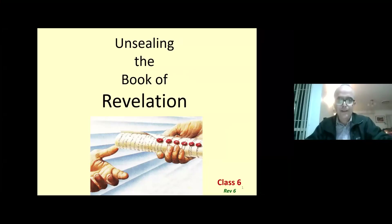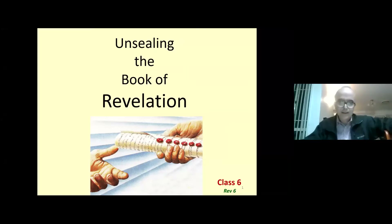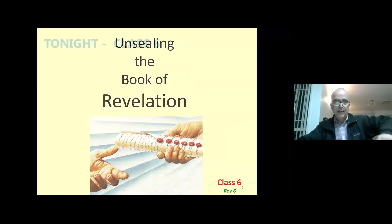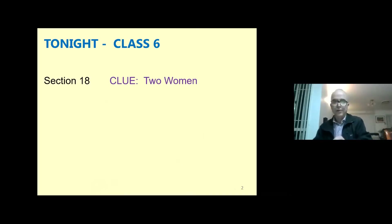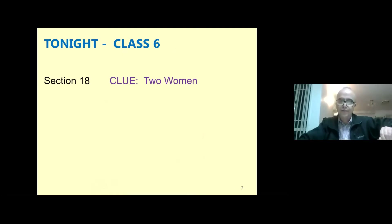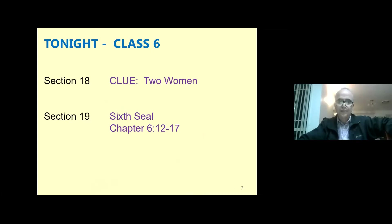Thanks again for joining us for the class. This is the third one for this second round. Today we're going to look at the end of Revelation chapter six. The content of today's class includes a short section called 'Clue: Two Women,' and then we're going to look at the sixth seal.